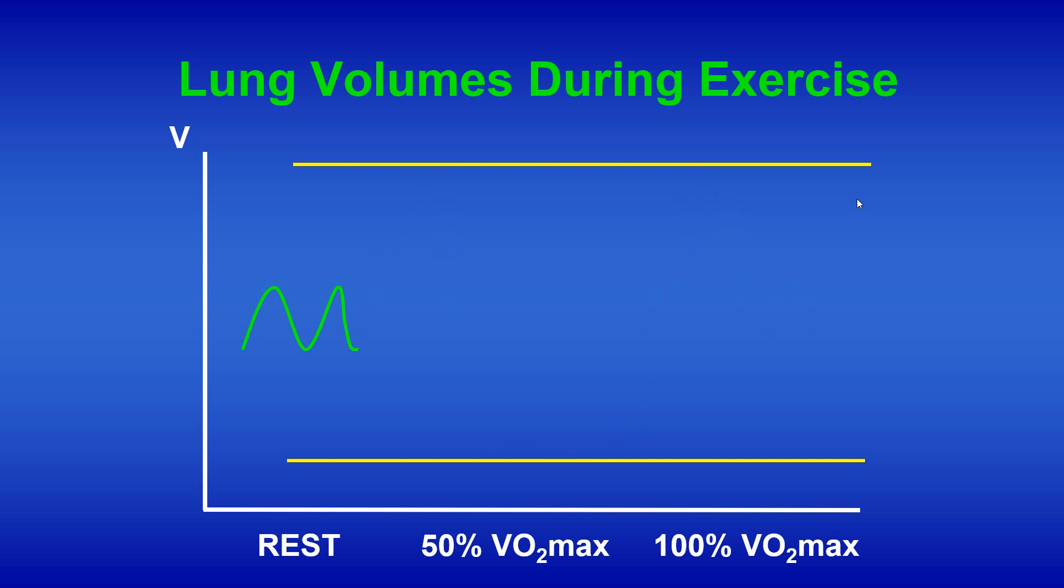So at rest we see our resting inspiration and expiration that has a rate to it but also a volume. Remember the ventilation is volume but also you can see the frequency of these breaths are fairly far apart which means we're breathing relatively slowly. At 50% of VO2 max we would have an increase in tidal volume as well as respiratory rate. And then at 100% VO2 max they would increase even further with an increase in tidal volume as well as another increase in respiratory rate.